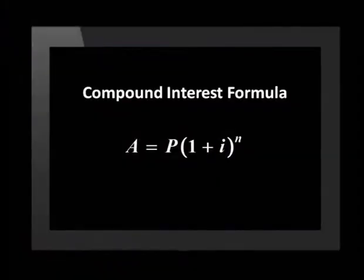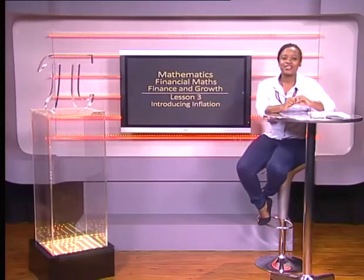Multiplying this with the 200 gives a final amount of two hundred and twenty-two rand. That's 22 rand more per month that I must find in two years' time. This has shown us that inflation is the reason for year-on-year price increases. Remember that we use the compound interest formula: A equals P times (1 + i) to the power of n.